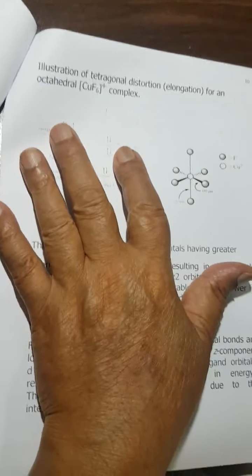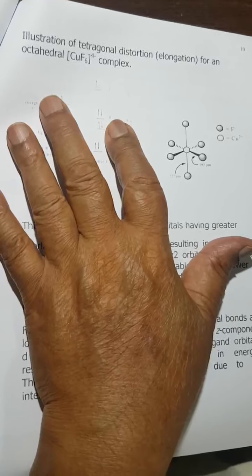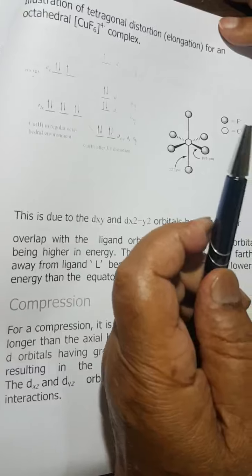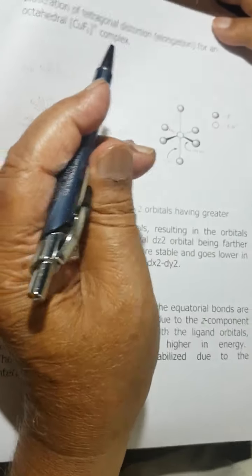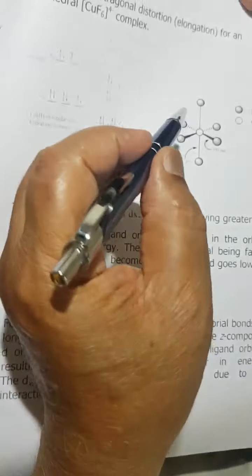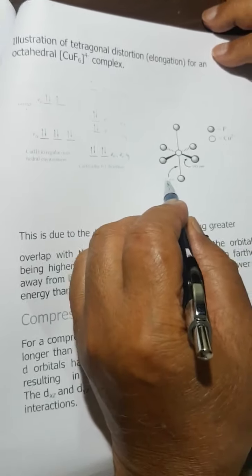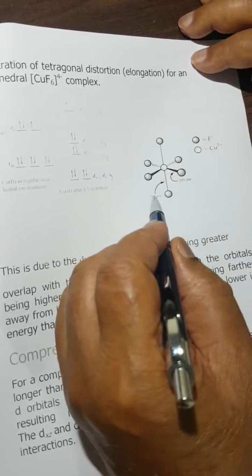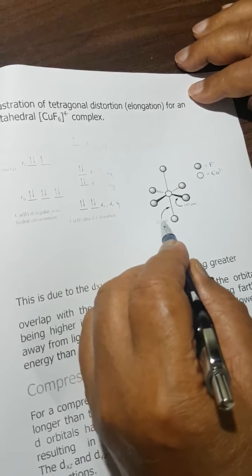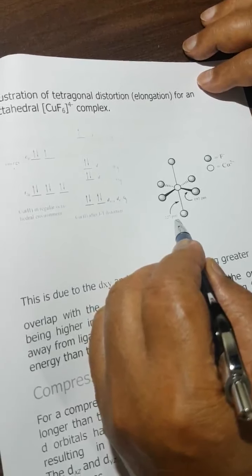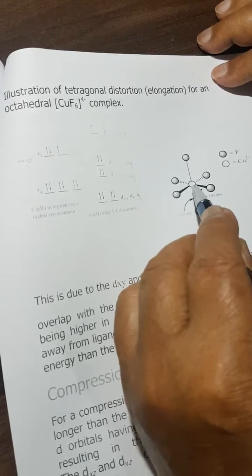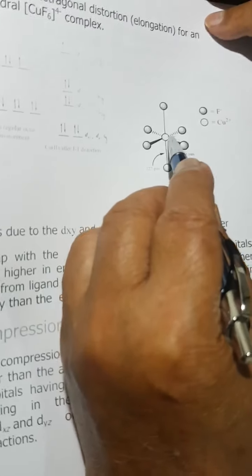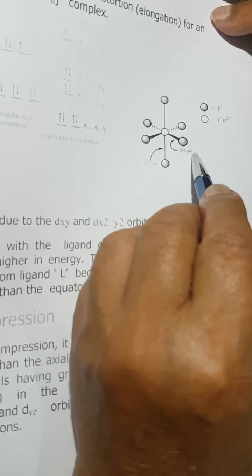This is a beautiful example of Jahn-Teller effect. When theory matches experiment, we feel very good about it. Look here - this is 227 picometer bond length for the axial bond versus 193 for equatorial.